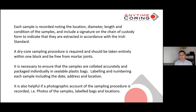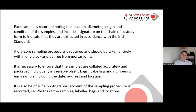Each sample is recorded noting the location, diameter, length, and condition of the samples. Include the signature on the chain of custody form to indicate they were extracted in accordance with the standard. It's very important to have a dry coring sampling procedure, and that the sample is taken entirely within one block and free from mortar joints — that is very, very important. When samples go for compressive strength testing, it's very important that there are no mortar joints within that, because it will alter the result of the compressive strength testing.